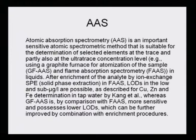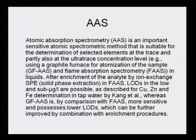Limits of detection in the low and sub-microgram per liter are possible, as described in the determination of copper, zinc and iron in tap water by Kang et al. using FAAS. Whereas graphite AAS is more sensitive than FAAS and possesses a lower limit of detection, which can be further improved by combination with enrichment procedures. There is a possibility of using flame AAS if the sample has gone through an enrichment procedure — an ion exchange solid phase extraction added on to the analytical method.